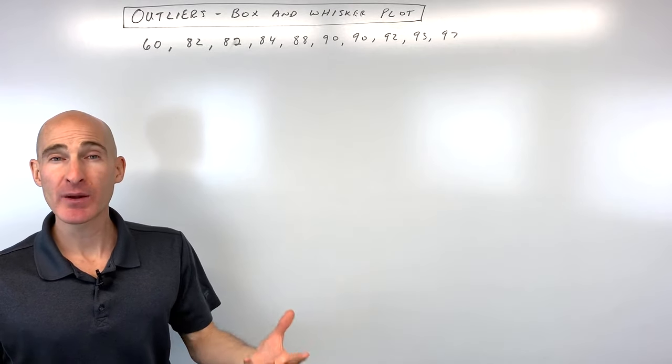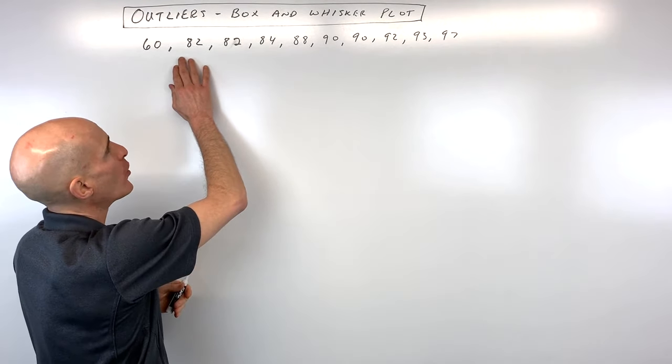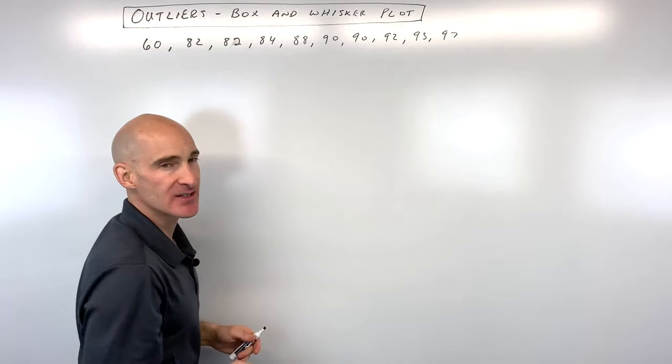So the first thing we need to do is create a box and whiskers plot. So let's go ahead and do that. The first thing you want to do is take your data points and order them from lowest to highest. That's important.